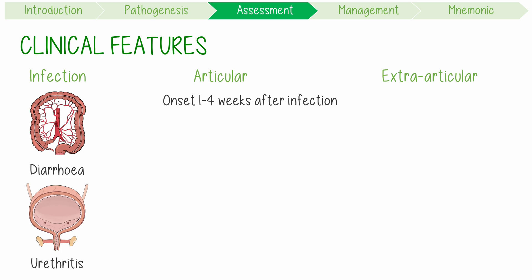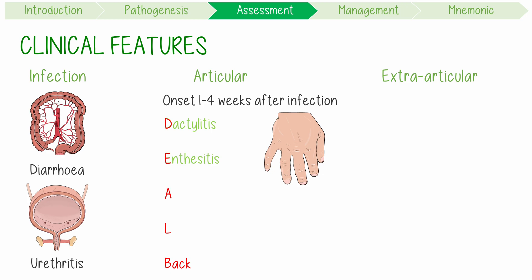To describe this arthritis, remember the DEAL-BACK acronym. Patients may develop dactylitis or sausage fingers, and enthesitis — inflammation around the site of insertion of ligaments and tendons. The peripheral arthritis is typically asymmetrical, mostly involving the lower limbs. Finally, inflammatory lower back pain is frequent too.